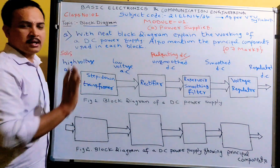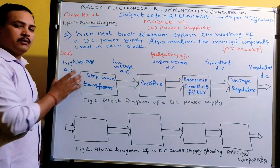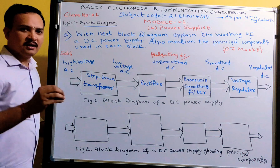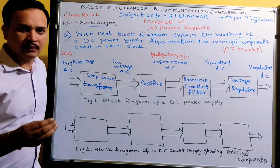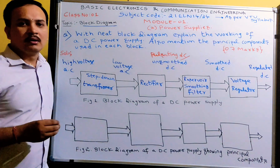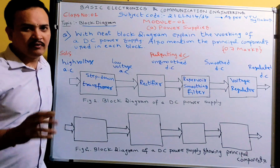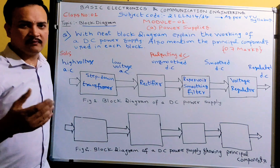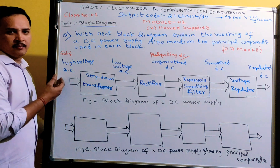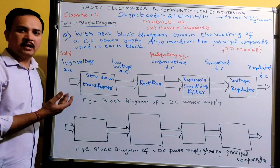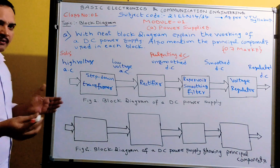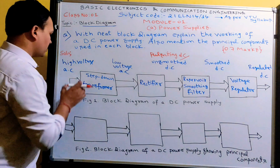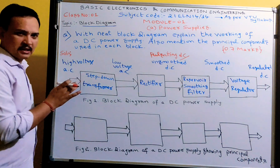The concept is: input is AC, output is DC. But the available voltage is high voltage AC. This high voltage AC may be single-phase 230 volts 50 Hz, or three-phase 450 volts 50 Hz, or maybe even higher voltage. For first-year purposes we can consider voltage levels of 230 or 450 volts. So we take high voltage AC as the starting point.